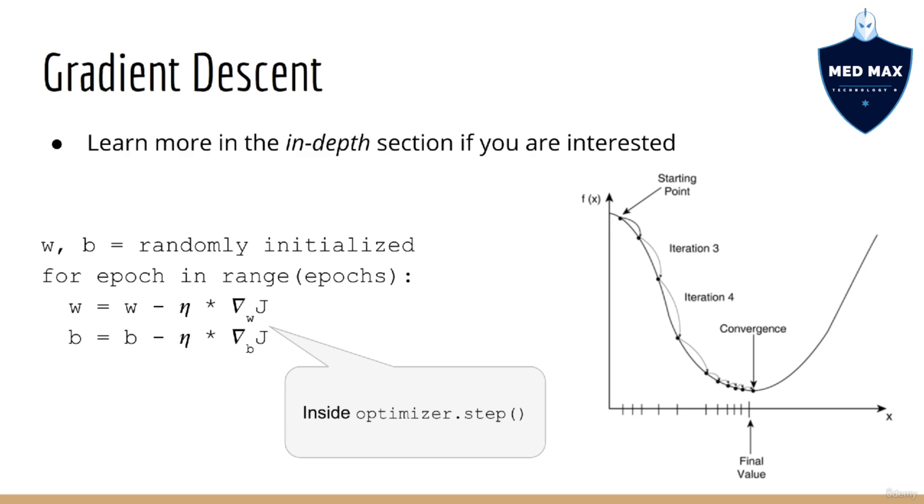Essentially, what we do is, we start at a randomly initialized point for both w and b. Since this is random, these probably don't lead to a small cost. So then, we find the gradient of our loss with respect to w and b. We then take small steps in this direction to update w and b on each iteration. Remember, these iterations are called epochs. Mathematically, you can prove that this leads to a decrease in cost, although we won't discuss that in this lecture. You can imagine that this is exactly what goes on inside the optimizer.step function.